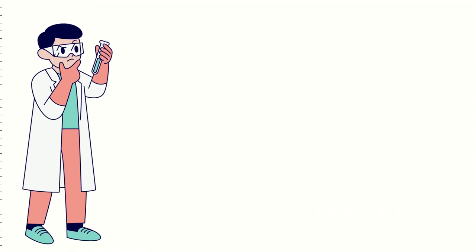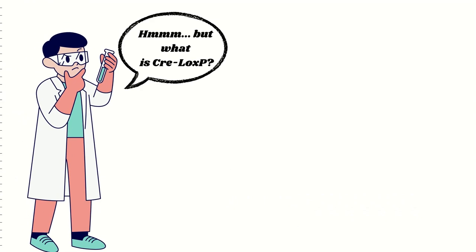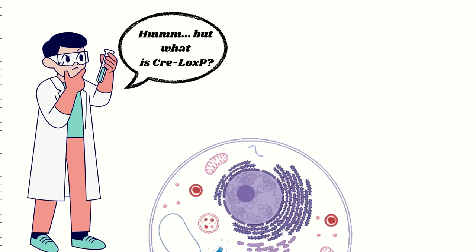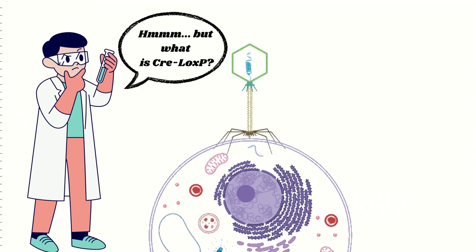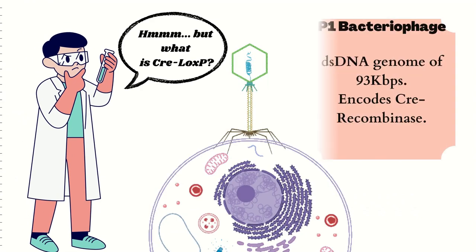You must wonder what the Cre-lox P system is. It was first discovered in the P1 bacteriophage, which mainly infects E. coli. It is a double-stranded DNA virus with a 93 kilobase pair genome, which produces the Cre recombinase protein.